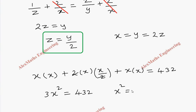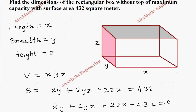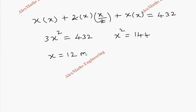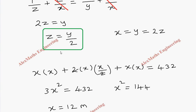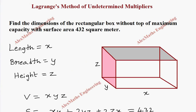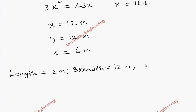So x² = 432/3 = 144. Taking the square root and keeping only the positive value since it is a length, x = 12 meters. Since x and y are equal, y = 12 meters. For z, we have z = y/2, so z = 12/2 = 6 meters. Therefore, the dimensions of the rectangular box are: length = 12 m, breadth = 12 m, and height = 6 m.